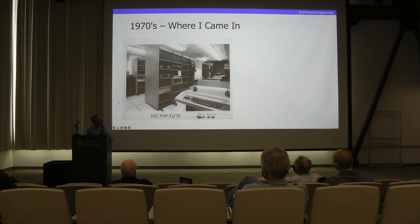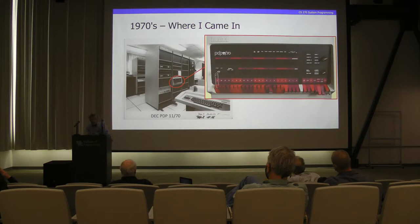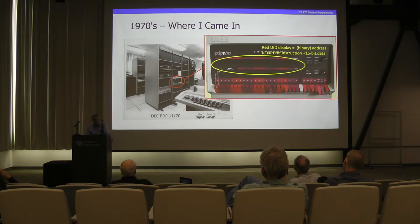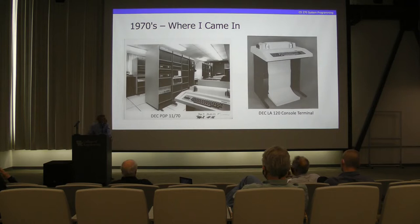This unit still had the rocker switches on the front — you could actually put in 16 bits of data to boot the thing. It had a 20-bit address and 16 bits of data through the rocker switch. It also had these LEDs — the red lights — that told you the current instruction address that was executing and the 16 bits of the register. You could tell if the machine was hung because the lights of the address were not changing. Eventually that all went away and you had to look at the terminal.